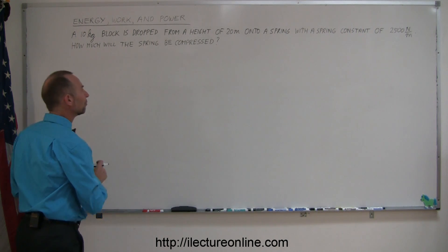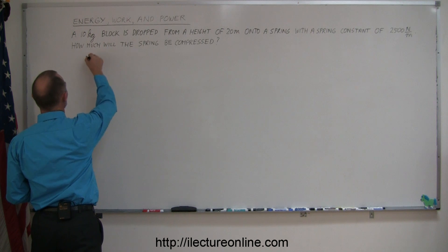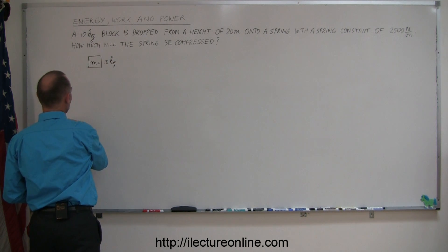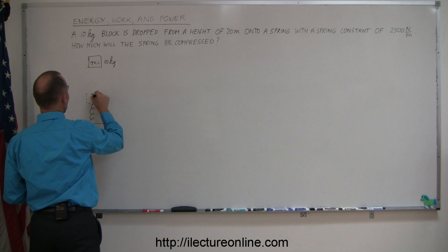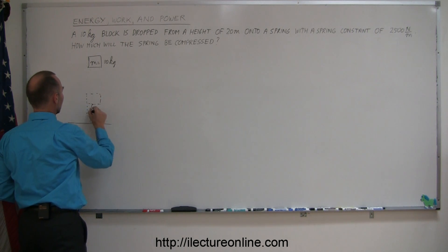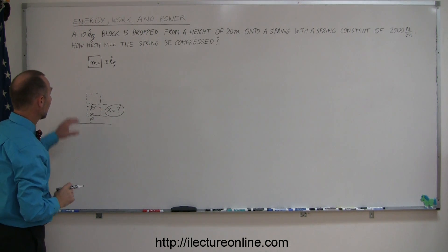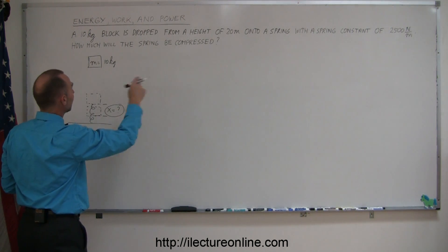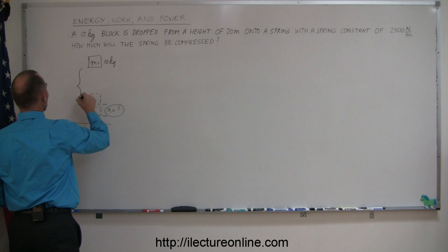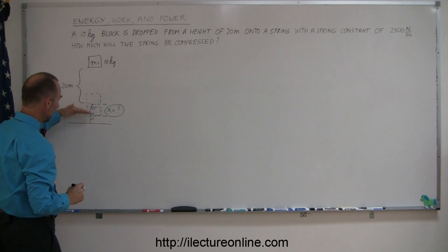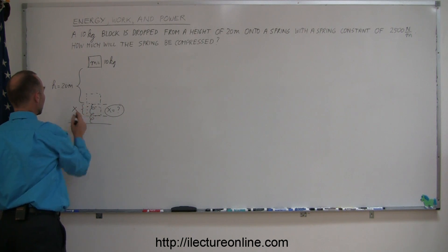We have a 10-kilogram block which is dropped from a height of 20 meters onto a spring with a spring constant of 2,500 newtons per meter. How much will the spring be compressed? Let's make a picture of that to get a feeling of what it looks like. So, we have a block. The mass is equal to 10 kilograms. We drop it from a certain height onto a spring. Here's the spring. The block will hit the spring, and then the spring will be compressed a distance until the block rests, comes to rest momentarily at some distance like this, where x is equal to the amount that the spring has been compressed.